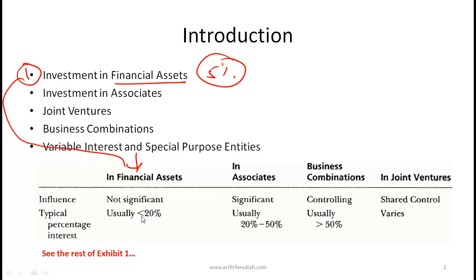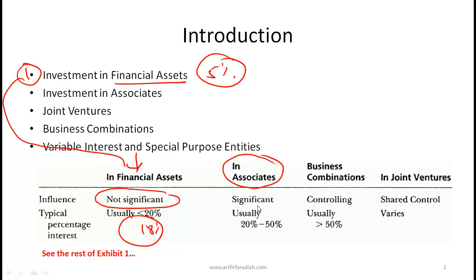These percentages are rules of thumb, not definitive rules. The most important criterion is whether you are exerting influence. For example, if you own 18% but are the largest shareholder and exert significant influence, it would not be categorized as a financial asset. If you own 30% of a small company and have significant influence, the categorization becomes investment in associate.